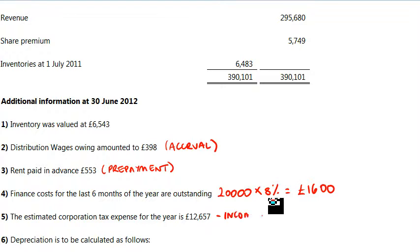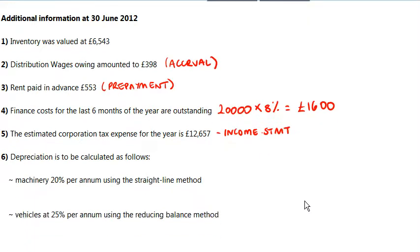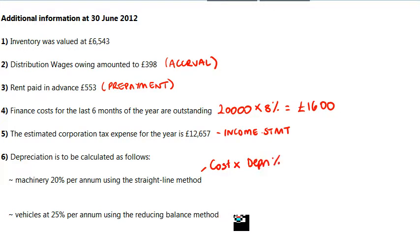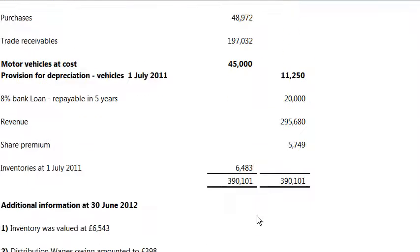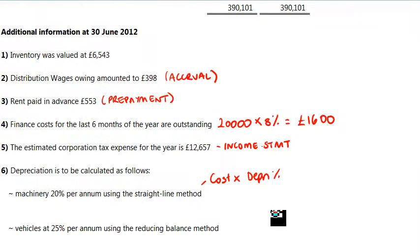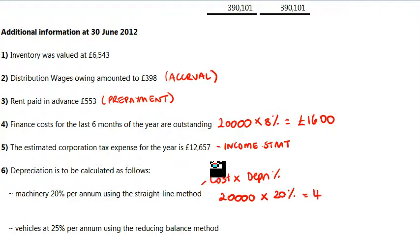The new thing is depreciation using the straight line method first, which is the cost times the depreciation percentage. We find the cost of the machinery: 20,000 and the percentage is 20 percent. If you work that out, it's four thousand pounds, and that goes in the income statement.